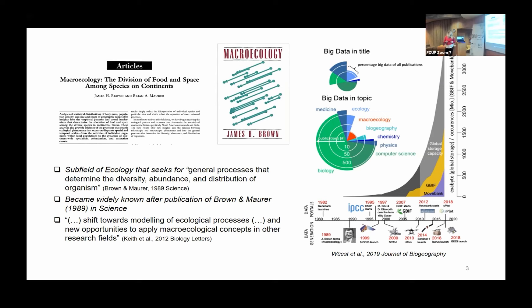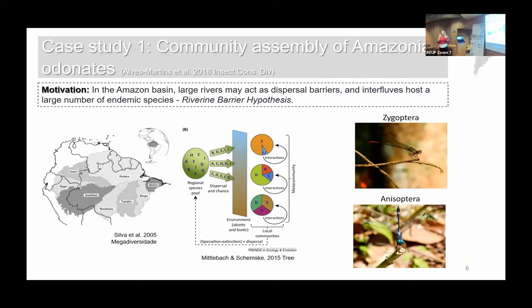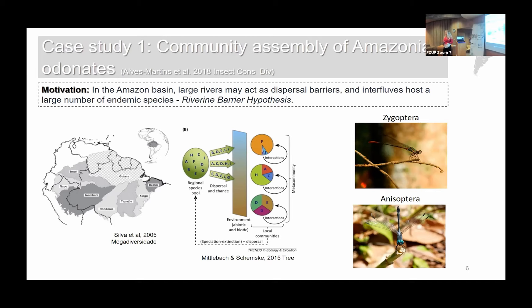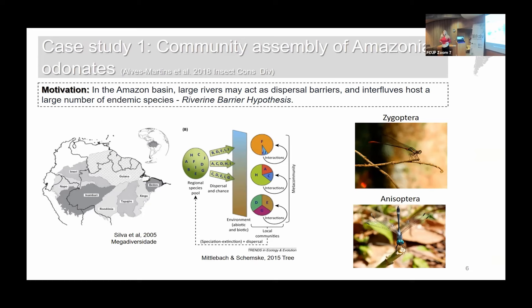In this study, the motivation was that in the Amazon we have a very unique environment, because we have large rivers. When I say large rivers, these rivers have a width of one kilometer or more — two, five, ten kilometers or more. This environment is very interesting because these rivers create regions of endemism in the Amazon.